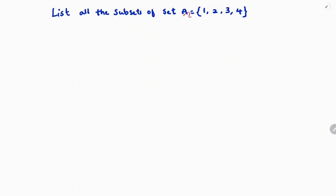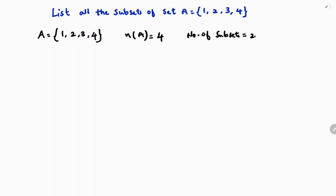List all the subsets of set A = {1, 2, 3, 4}. There are 4 elements, so the cardinal number is 4. The number of subsets is 2 power n, where n is the number of elements — 2 power 4, which is 16. So we will get 16 subsets. Let's see how to write the subsets.